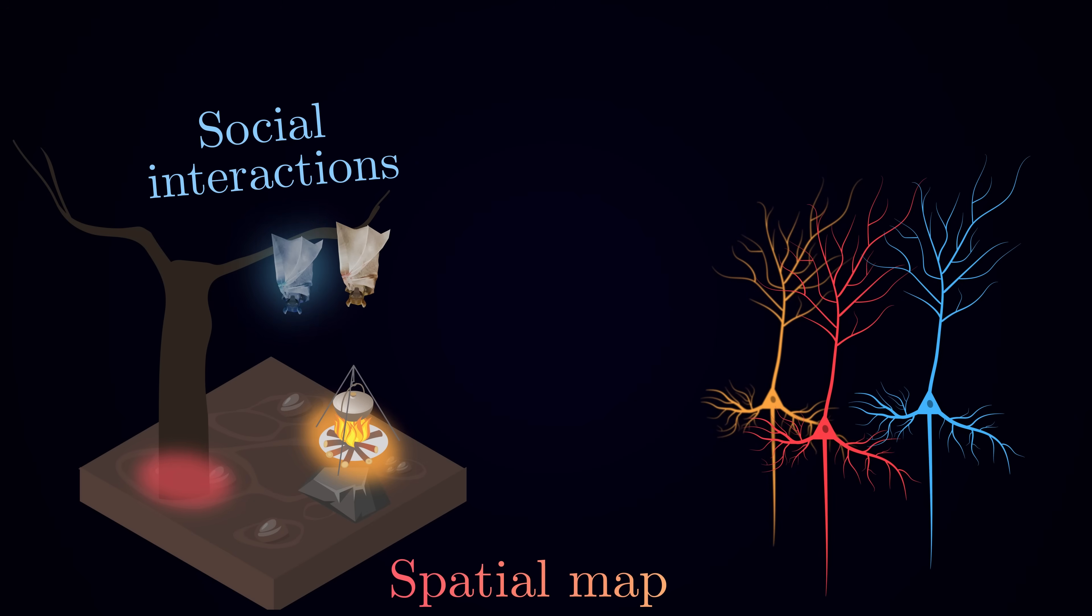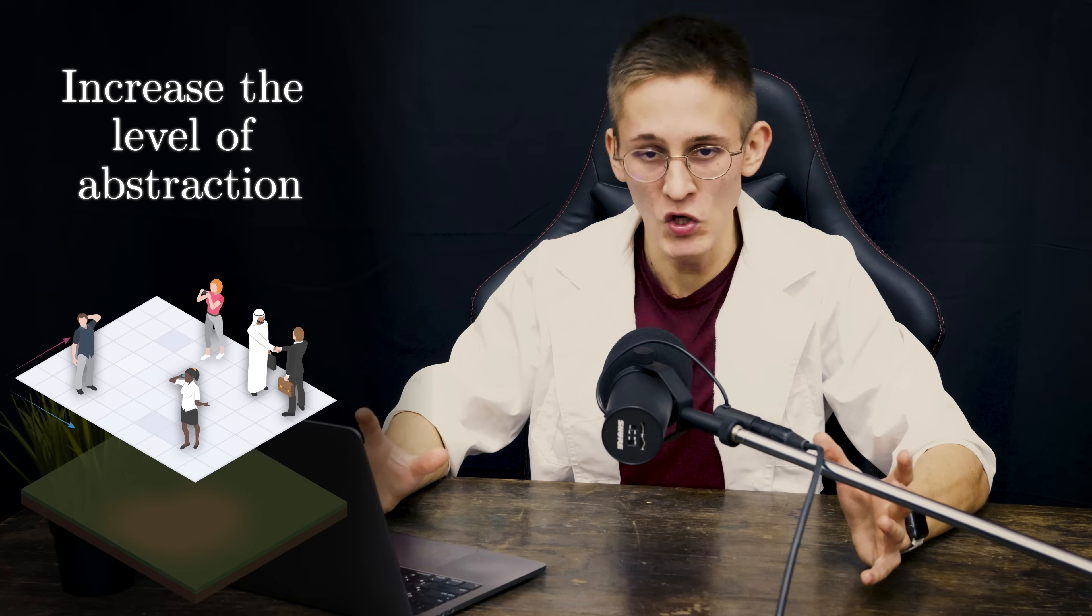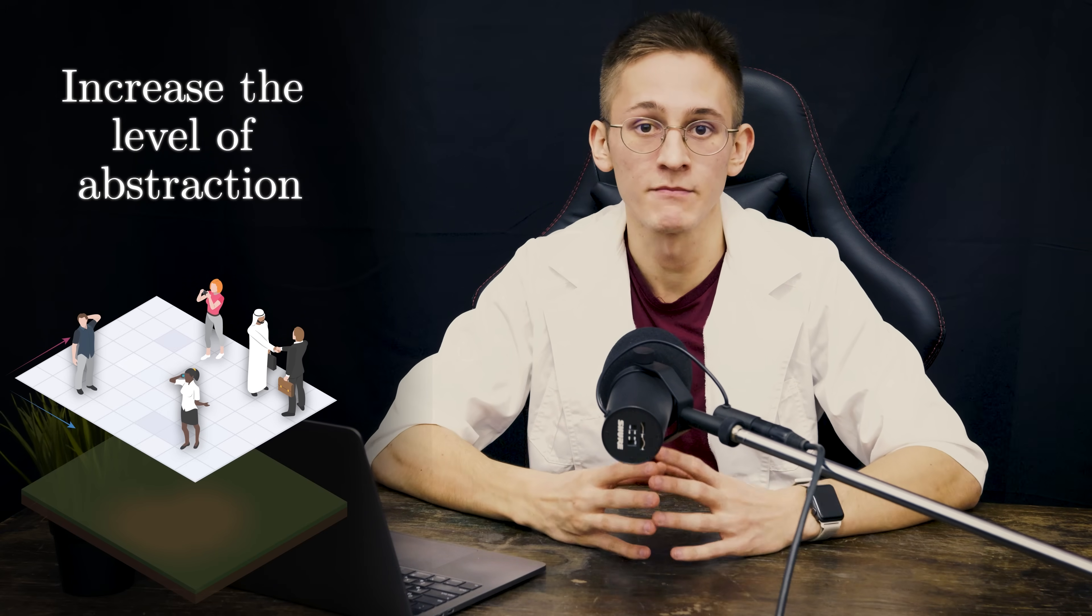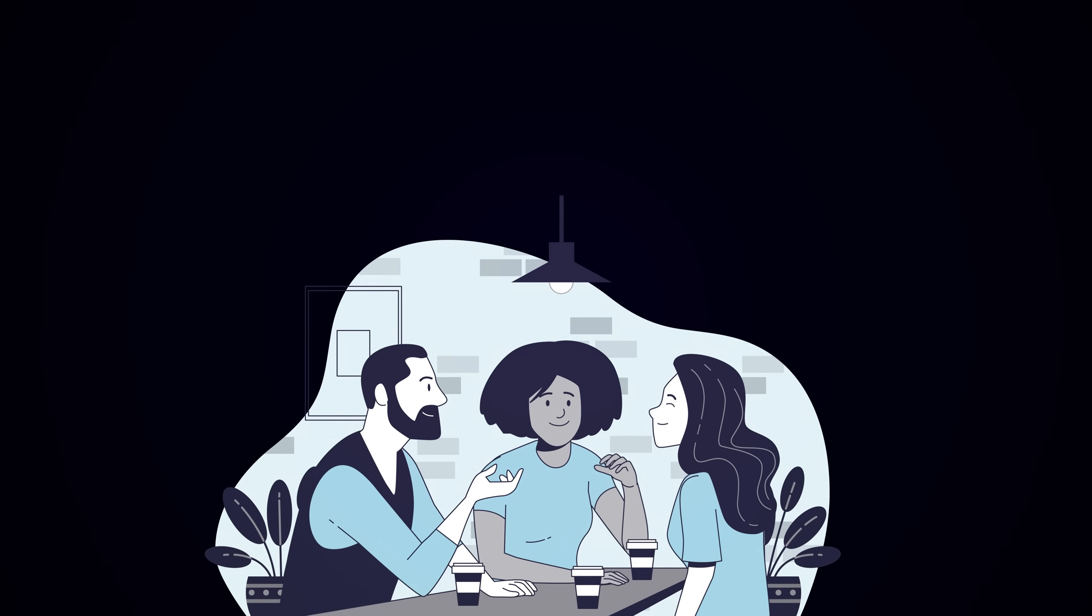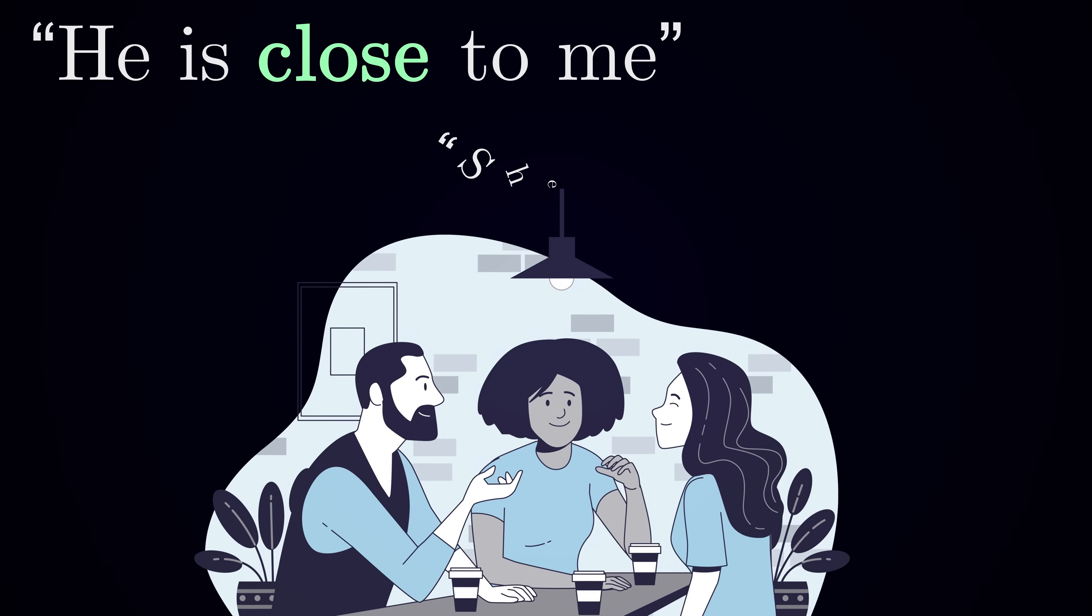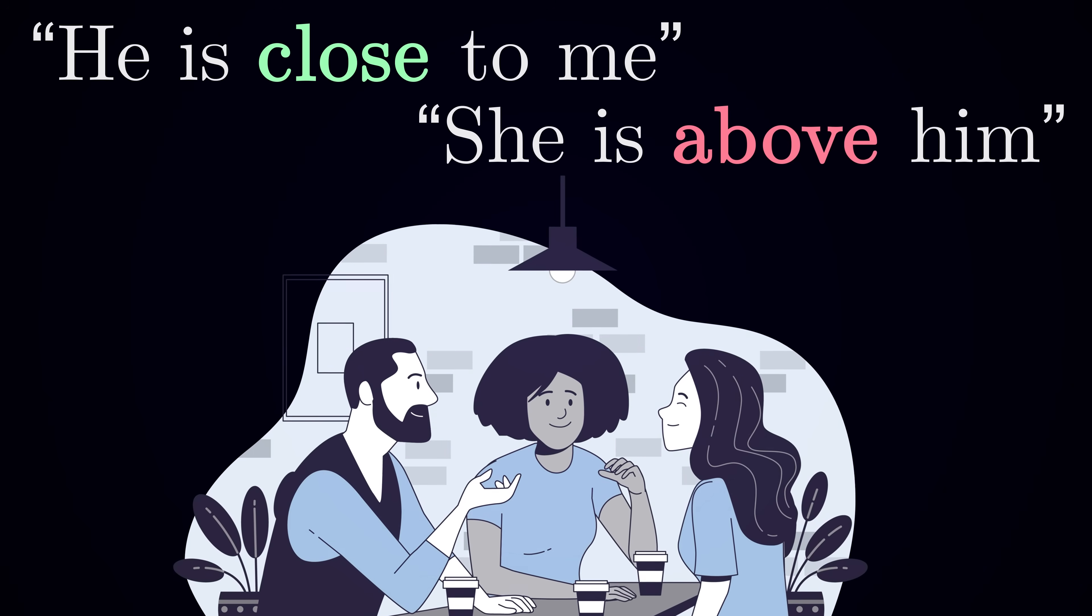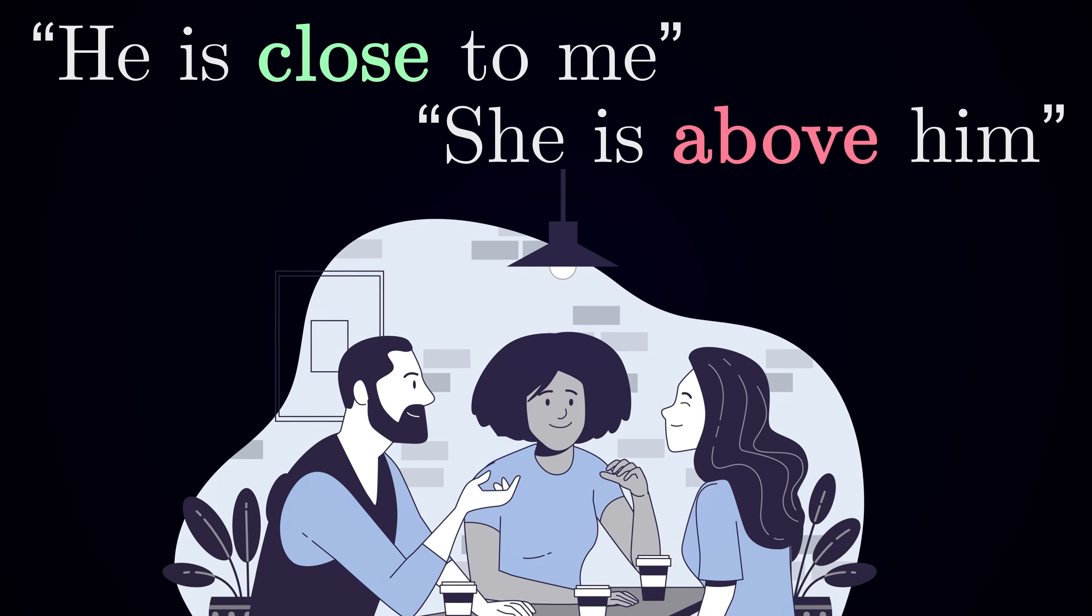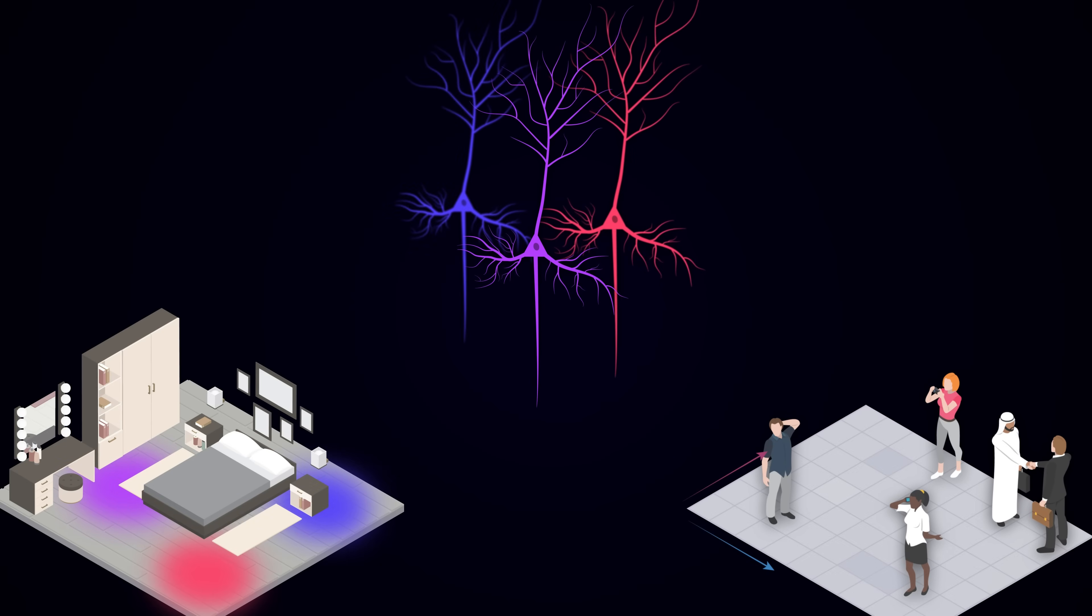But what if we remove the space completely? To do this, we are going to increase the level of abstraction one step further, to the point which is only humans and other higher primates are capable of. In our daily life, we often use metaphors like he is close to me or she is above him in the social context. Could it be that it is more than just a figure of speech? Perhaps the social space inherits the neural substrate from its more ancient physical counterpart?